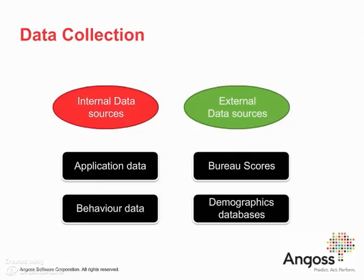The first step is to collect the data. There are two sources: internal data from inside the organization, and external data from outside. Internal data always includes application data — information provided by the customer at the point of application, such as age, income, years of residency, and sales channel. Once a customer has been accepted for a credit card, for example, we also have balances, number of usages, payment history, and many variables over time representing the customer's behavior in using the credit product.